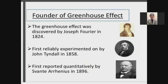There are three founders for the greenhouse effect. The greenhouse effect was discovered by Joseph Fourier in 1824, first reliably experimented on by John Tyndall in 1858, and first reported quantitatively by Svante Arrhenius in 1896.